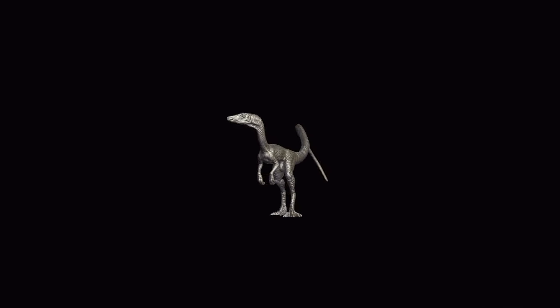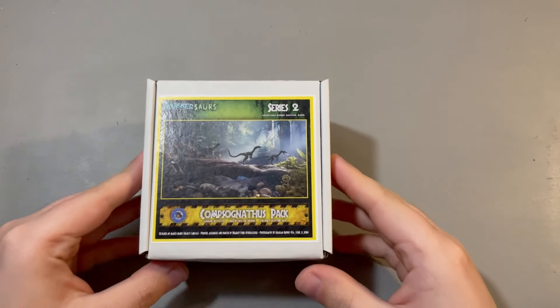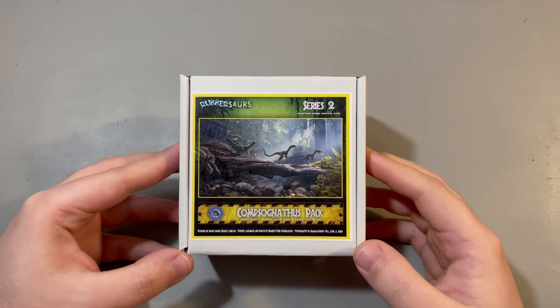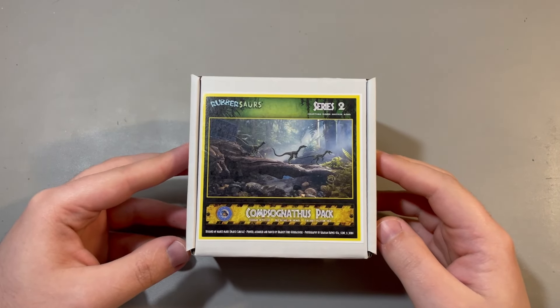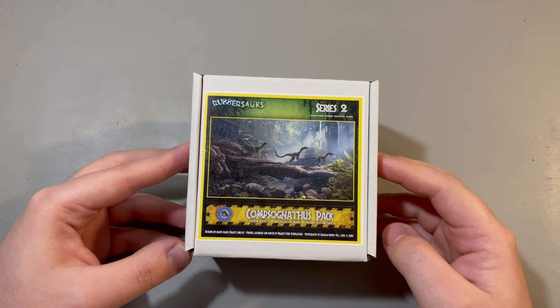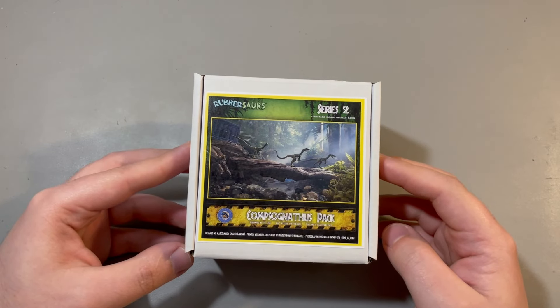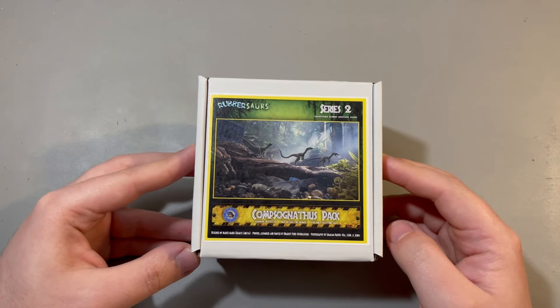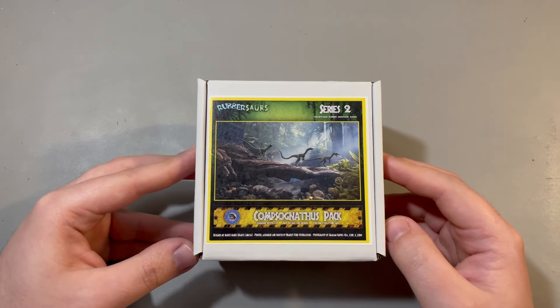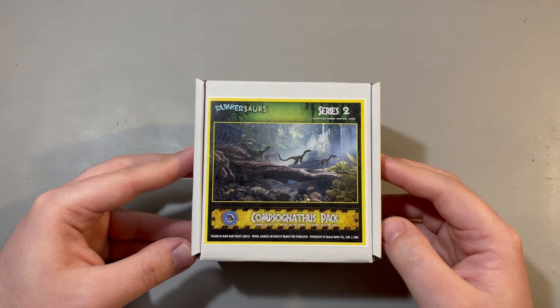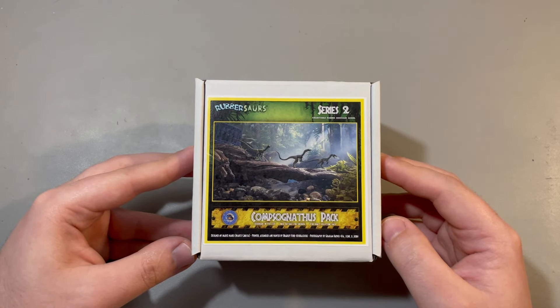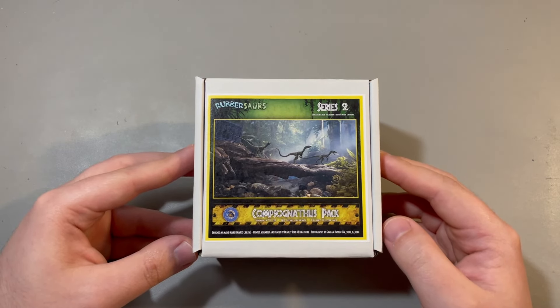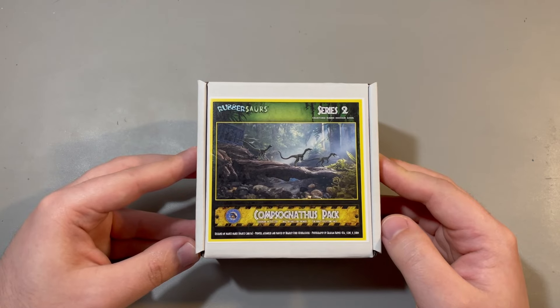Let's have a look at what Bradley has made for us. This is the Robasaurs Compsognathus pack, designed by myself and made by Bradley in the USA. This is the first time ever that I'm collaborating with someone making Robasaurs, and this is going to be the future from now on. I'm not going to be the only one making them, but they'll all be designed by myself.